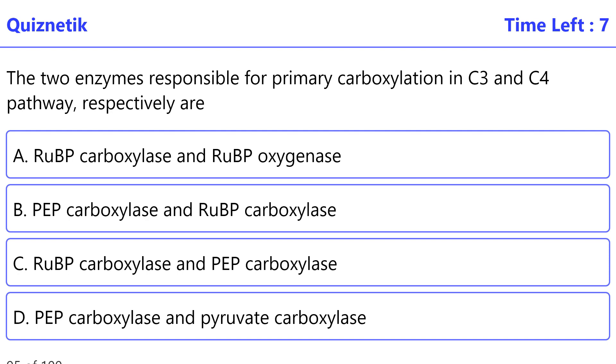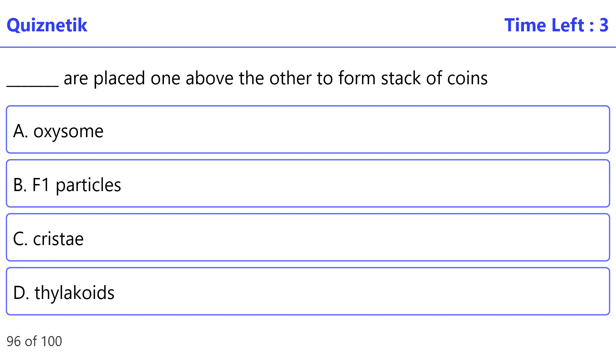The two enzymes responsible for primary carboxylation in C3 and C4 pathways respectively are - the correct option is C: RuBP carboxylase and PEP carboxylase. These are placed one above the other to form a stack of coins - the correct option is D: grana.